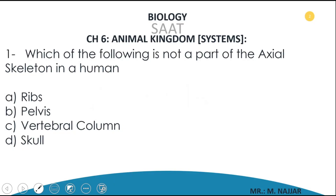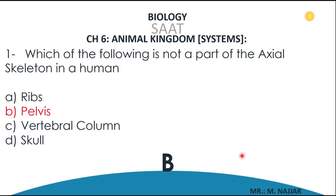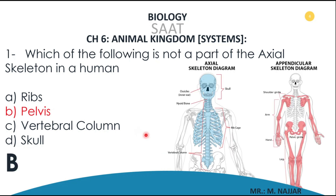Question number one: which of the following is not a part of the axial skeleton in a human? A) ribs, B) pelvis, C) vertebral column, D) skull. The answer is B — the pelvis. The pelvis is not considered a part of the axial skeleton. If you are looking here, we have the axial and appendicular skeletal systems.